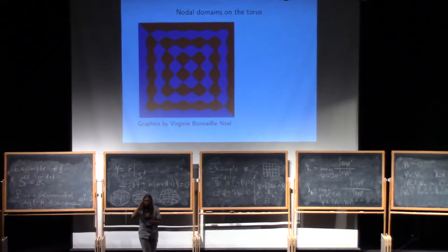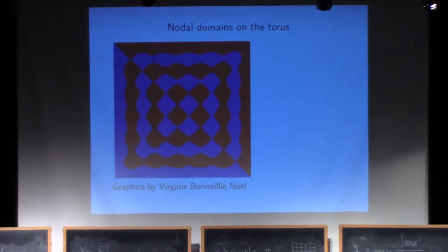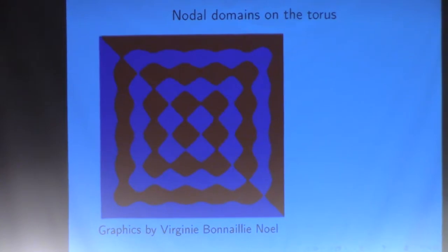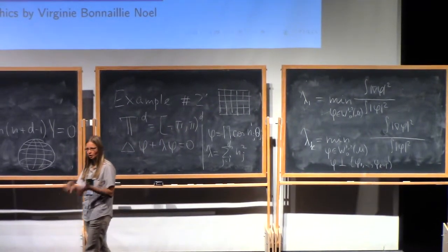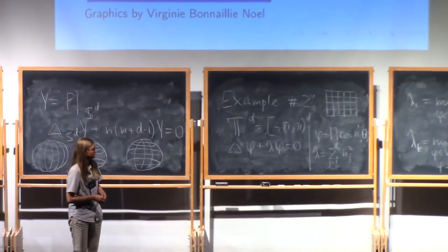This is an example of two nodal domains for a torus or a square. So you can combine eigenfunctions such that the number of your nodal domains is just two. The eigenvalue is high. You can do it for very high, for very large eigenvalues.